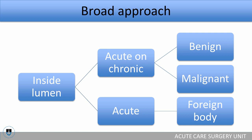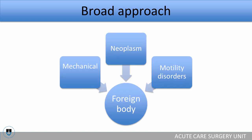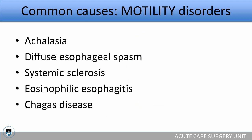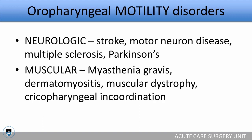Going back to the broad approach in adults: reasons inside the lumen as a cause of obstruction include benign causes, malignant causes, and foreign bodies — and with foreign bodies, remember there might be mechanical, neoplastic, or motility disorders as an underlying cause. Common motility disorders predisposing to acute esophageal obstruction include achalasia, diffuse esophageal spasm, systemic sclerosis, and eosinophilic esophagitis, which has been shown to account for about 50% of episodes of acute esophageal obstruction in adults at a large center in the States.